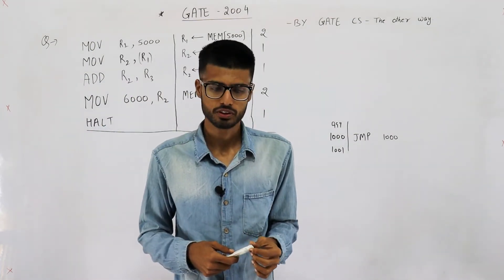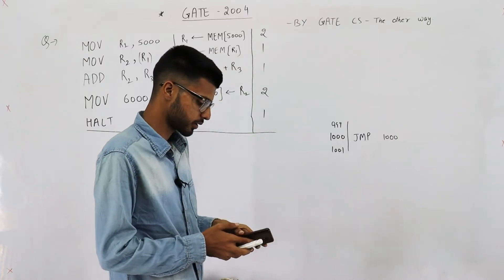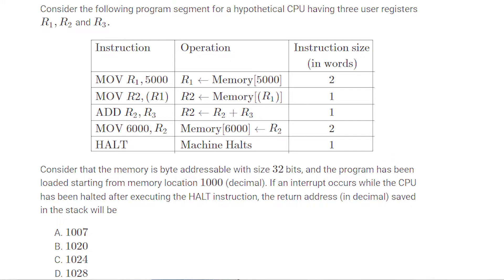Let's look at this GATE 2004 question. Consider the following program segment for a hypothetical CPU having registers R1, R2, and R3. Memory is byte addressable with size 32 bits, and the program has been loaded starting from memory location 1000 in decimal. If an interrupt occurs while the CPU has been halted after execution of the HALT instruction, what is the return address in decimal saved on the stack?